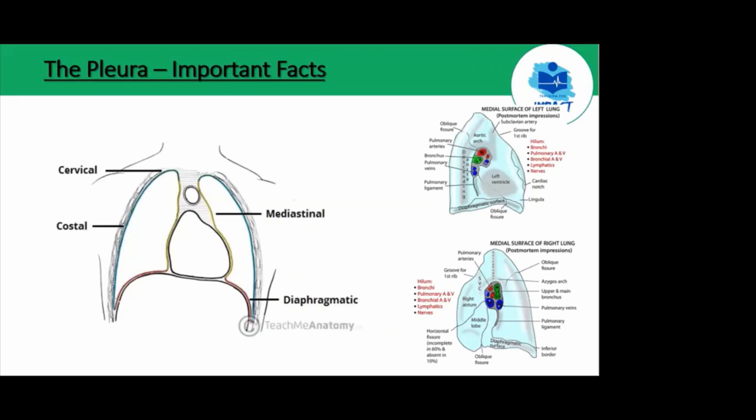The parietal pleura is adjacent to the thoracic cage and is innervated by phrenic and intercostal nerves. If the parietal pleura were to be damaged, would anyone like to answer whether it would be well-localized or poorly-localized pain? Very good, Jonathan — it's well localized.